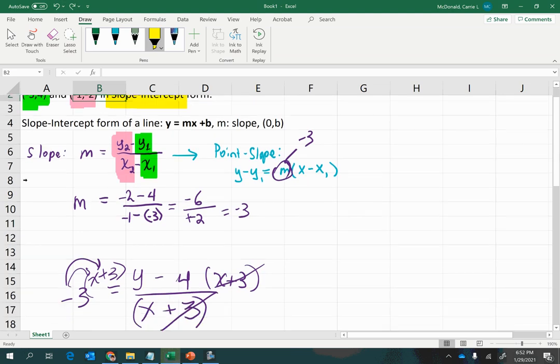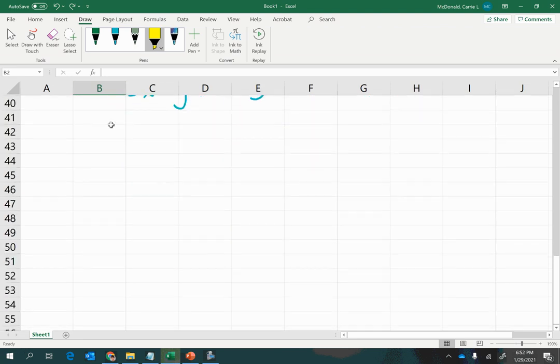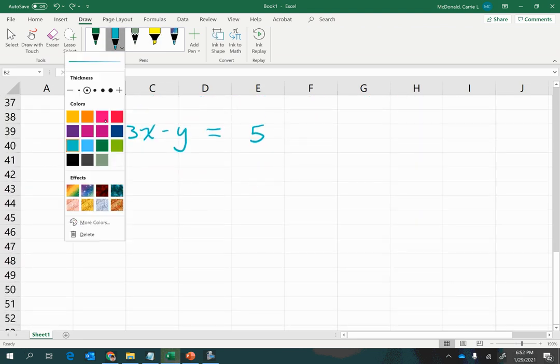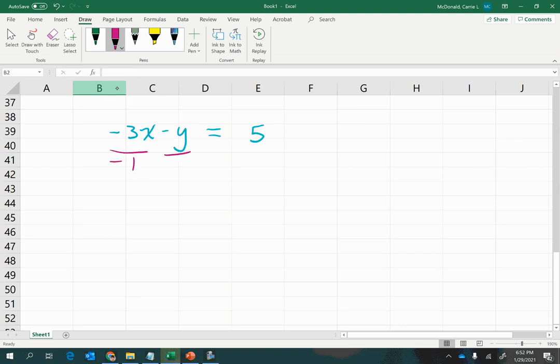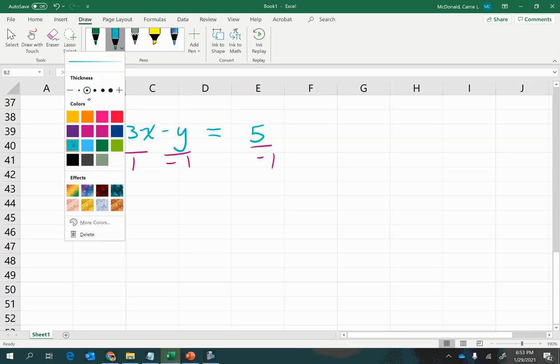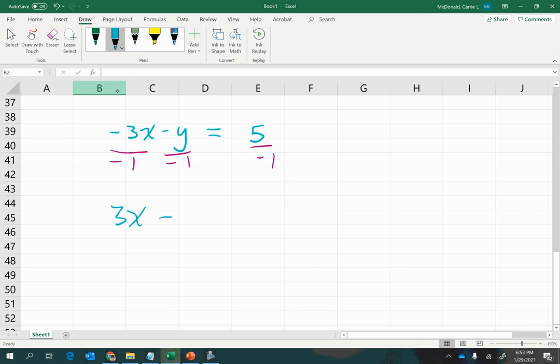We'll go ahead and change the signs of every term. Some students would say you would divide everything by a -1, which will accomplish the same thing. If you divide everything by a -1, then a negative divided by a negative becomes a positive. A negative divided by a negative becomes a positive, and a positive divided by a negative becomes a negative. The easier way of thinking about it is just make sure all the signs of every term changes to the opposite. Instead of -3x I have positive 3x, instead of -y I have positive y, and instead of positive 5 I have -5. That would be our final result in standard form.